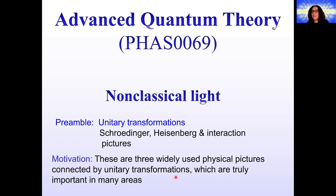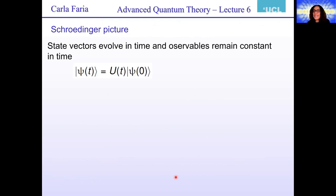If you want to discuss unitary transformations, you really have to look at these three pictures. The Schrödinger picture is something we are all a bit familiar with, because so far we have assumed that the state vectors evolve in time and the observables remain constant in time. If you apply a time evolution operator to a vector in state space at time zero and evolve it from zero to t, you get another ket, psi(t).